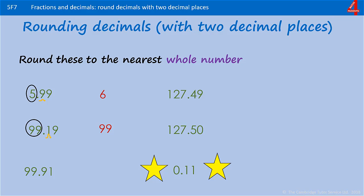The next one, 99.91. Again, the whole number is 99, but this time we have 9 tenths, so the next whole number is 100.